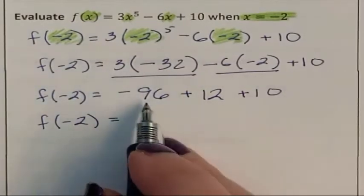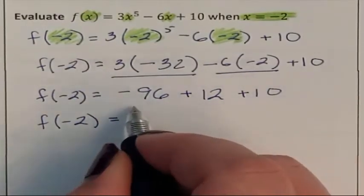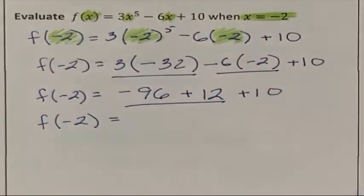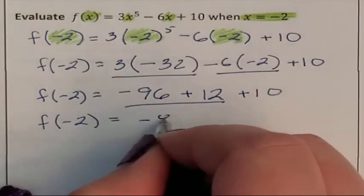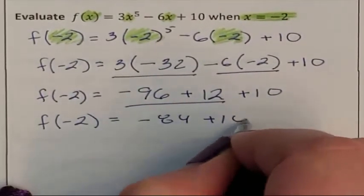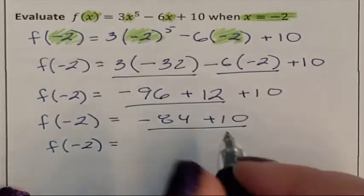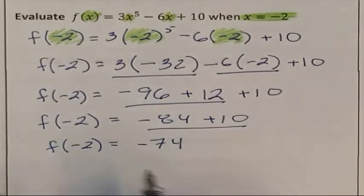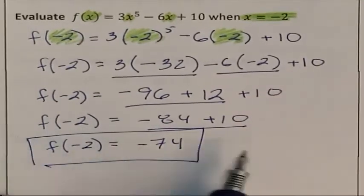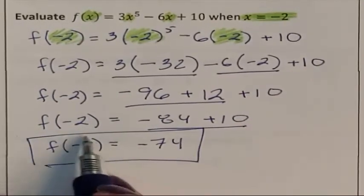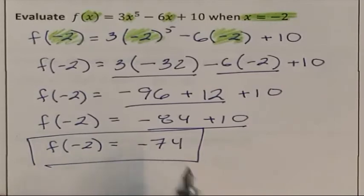Now we're supposed to go through from left to right and add as it comes up. So first one I see is a negative 96 plus 12. So I have negative 84 and now we need to add that 10. So negative 84 plus 10 is a negative 74. I tested my f rule at negative 2 and I got the answer negative 74.